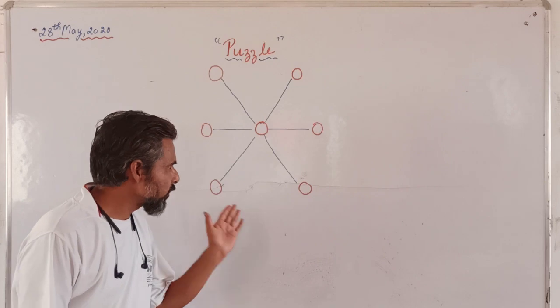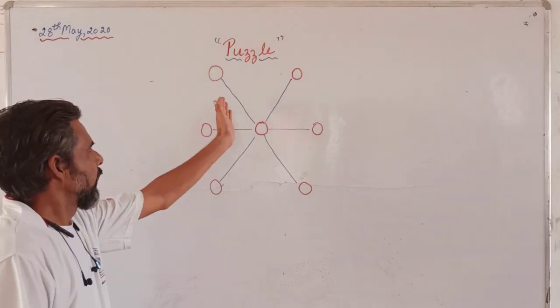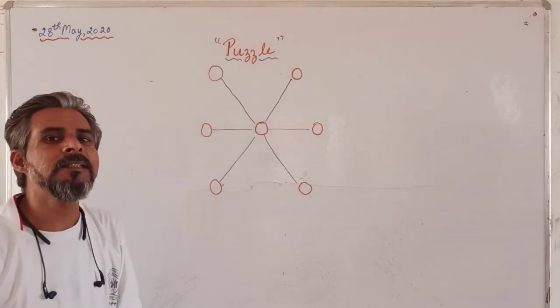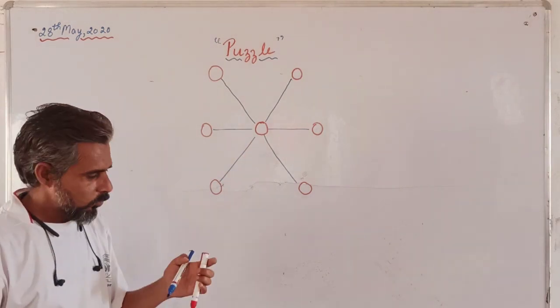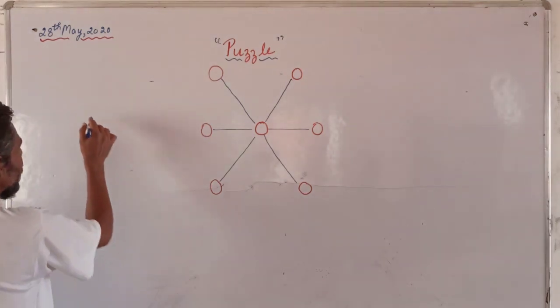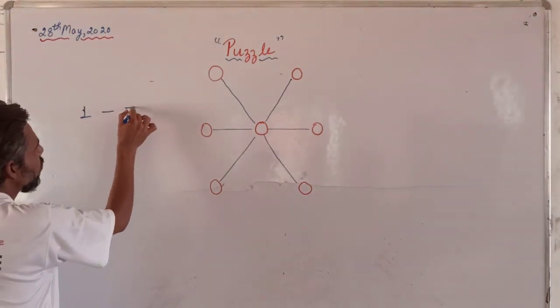Now in today's puzzle, as you can see, 1, 2, 3, 4, 5, 6, 7 - seven circles are there in which nothing is written. So we are going to have seven circles with the numbers from 1 to 7.